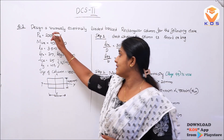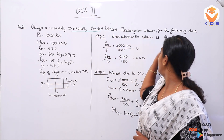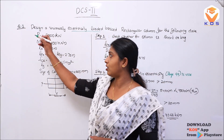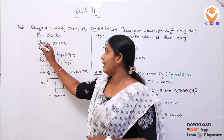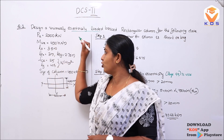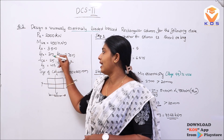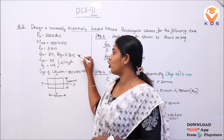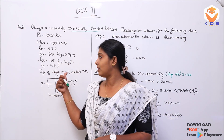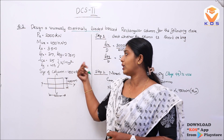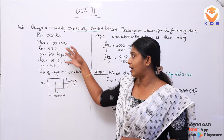First problem: Design a uniaxially eccentrically loaded rectangular column for the following data. The size of the column — PU is 2000 kN, MUX is equal to 400 kNm, L0 is equal to 3.5 m, LEX is 3 m, LEY is 2.75 m. FCK is 25 N/mm² and FY is equal to 415 N/mm². Size of the column is 400 by 600 mm. This is the given data.